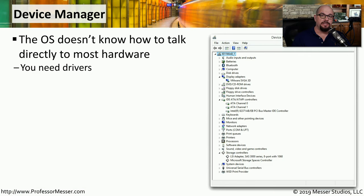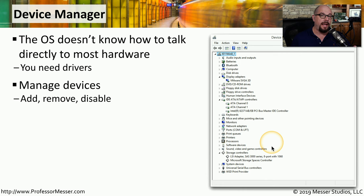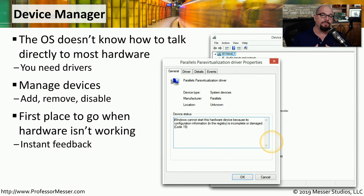With any operating system, you need a device driver that sits between the hardware and the operating system software. In Windows, you'll find the summary of this under Device Manager. This allows you to view all of the devices and the drivers that have been loaded for each device, and then you can add, remove, or disable any of these device drivers. If you're having problems with a piece of hardware, or you'd like to get information on the status of how hardware might be running, you'll be able to view all of that inside Device Manager.